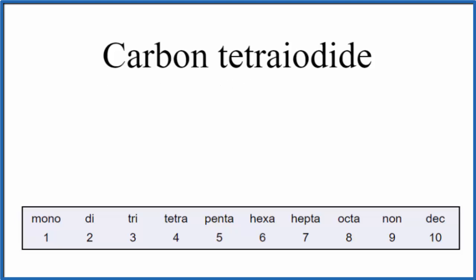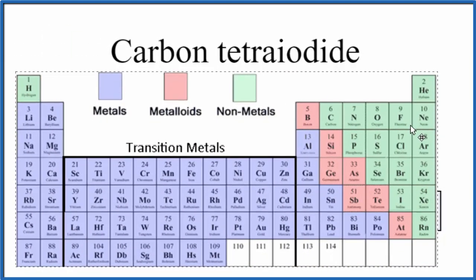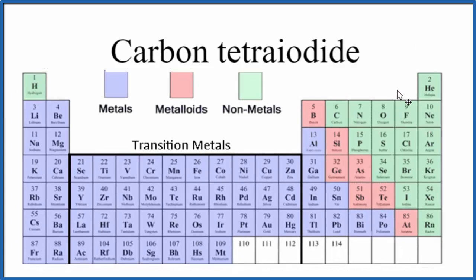So when we look at the periodic table here and we find carbon and then iodine. So here is carbon right here, and here is iodine. They're both nonmetals.